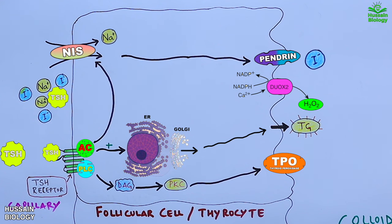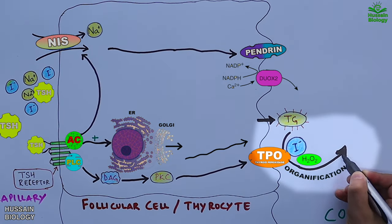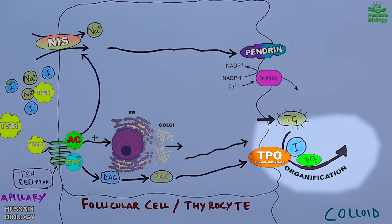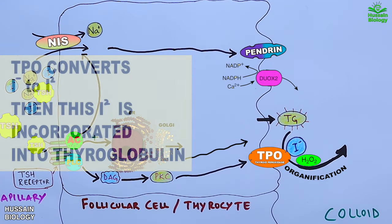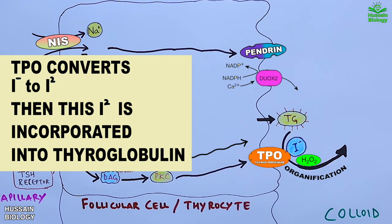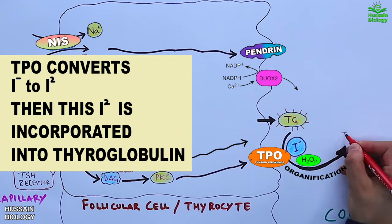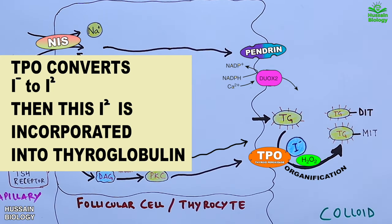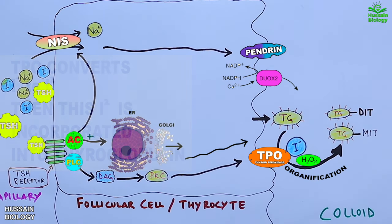TPO acts upon the iodide ion and oxidizes it, converting it into iodine. This iodine then reacts with tyrosyl residues of the thyroglobulin molecule, giving us thyroglobulin with MIT (monoiodotyrosine) and DIT (diiodotyrosine). This whole process is termed organification of iodine, where inorganic iodine is incorporated into thyroglobulin after oxidation.